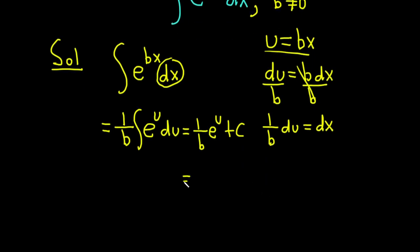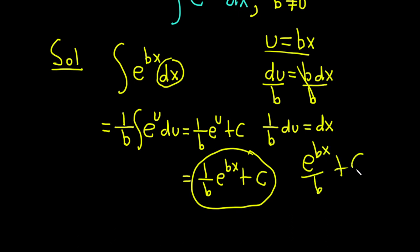This becomes 1 over b, e to the bx, plus c. And you can leave it like that, or you can write it like this, e to the bx over b, plus c.